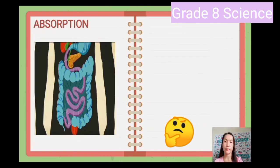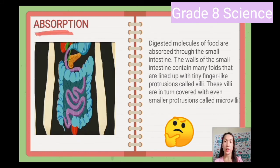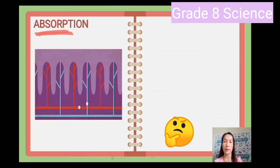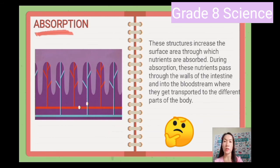Absorption: digested molecules of food are absorbed through the small intestine. The walls of the small intestine contain many folds that are lined with tiny finger-like protrusions called villi. These villi are in turn covered with even smaller protrusions called microvilli. These structures increase the surface area through which nutrients are absorbed. During absorption, these nutrients pass through the walls of the intestine and into the bloodstream, where they get transported to the different parts of the body.